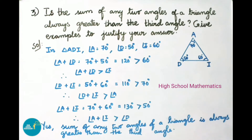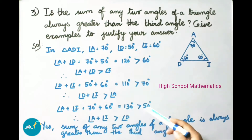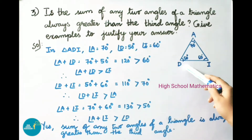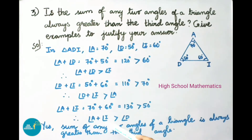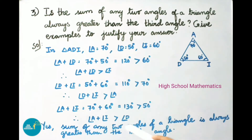Now we take the sum of angle A and angle I. That equals 70 degrees plus 60 degrees, which is 130 degrees, and this is greater than the third angle D, which is 50 degrees. That is, 130 degrees is greater than 50 degrees. Therefore angle A plus angle I is greater than third angle angle D. By this example we observe that yes, the sum of any two angles of a triangle is always greater than the third angle.